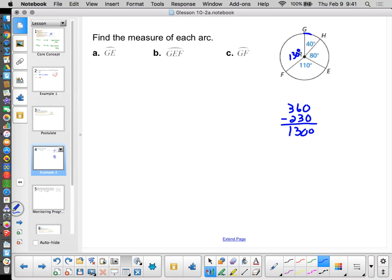Arc GE. Okay, that's this arc. Well, I got a 40 plus an 80 there. 40 plus 80 is 120. Now, how did I know to go that way and not the long way around? Because it's a minor arc. He only gave us two letters.